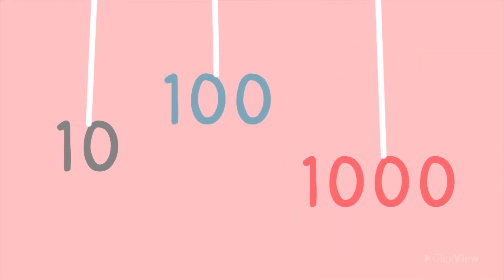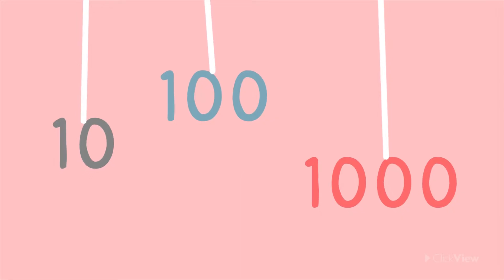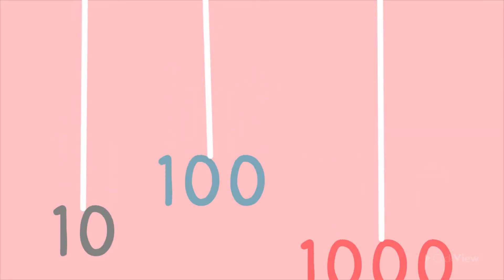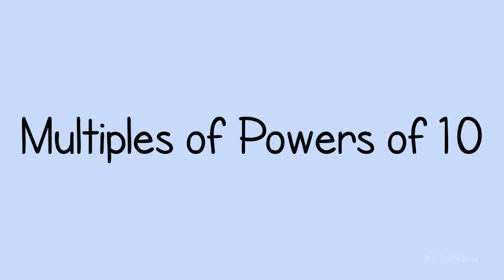These numbers have something in common. Can you spot what it is? We call these numbers Multiples of Powers of Ten. That's a bit of a mouthful, isn't it? But don't worry, it's not as complicated as it sounds.